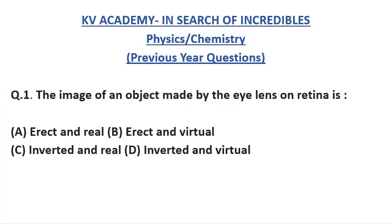First question: The image of an object made by the eye lens on the retina — the first option is erect and real, the second is erect and virtual, the third is inverted and real, and the fourth is inverted and virtual. The correct answer is inverted and real. The image formed by the eye lens is inverted and real in nature.